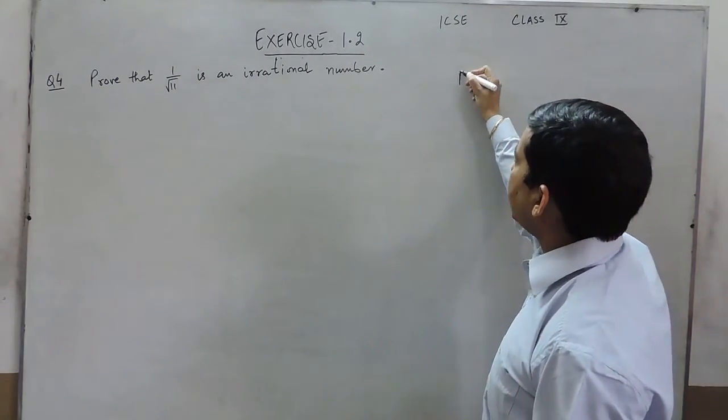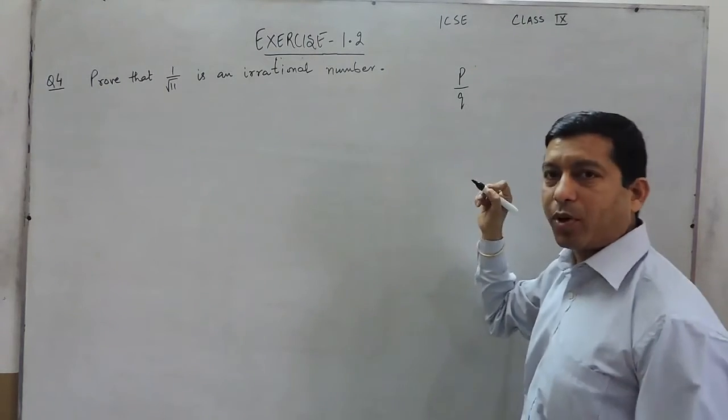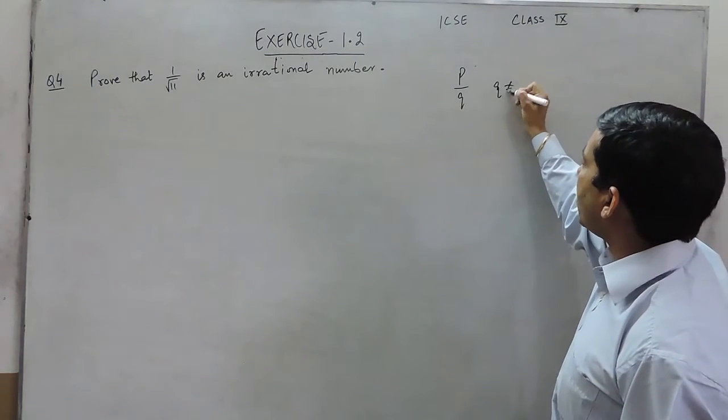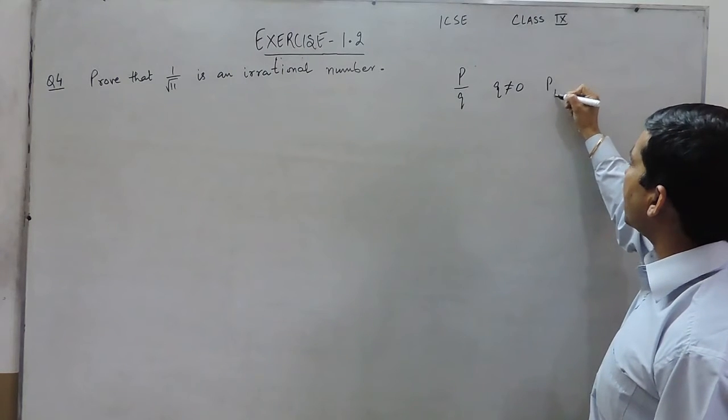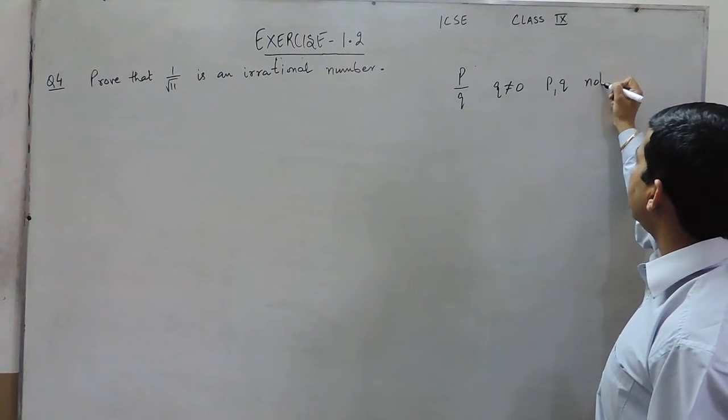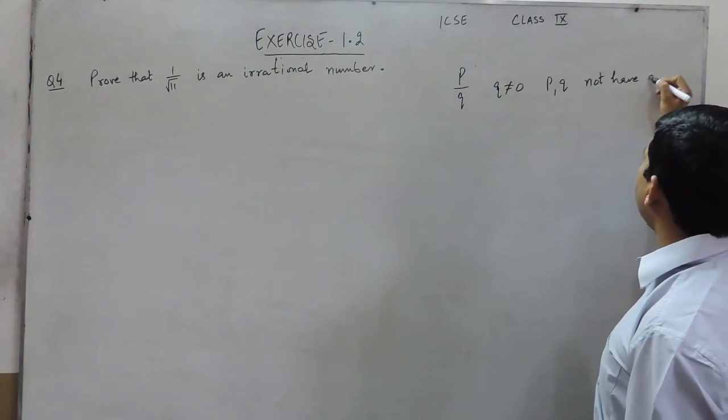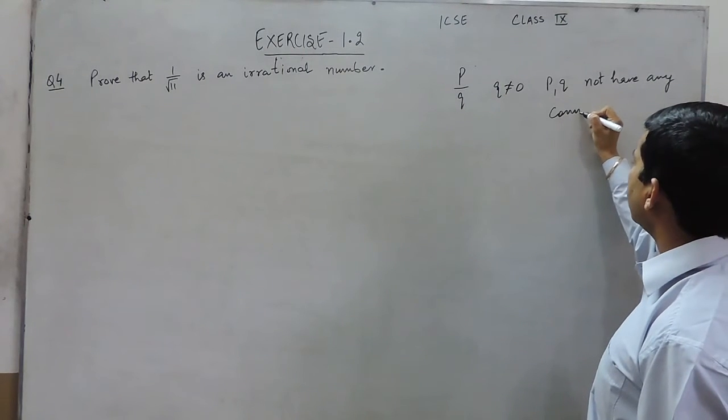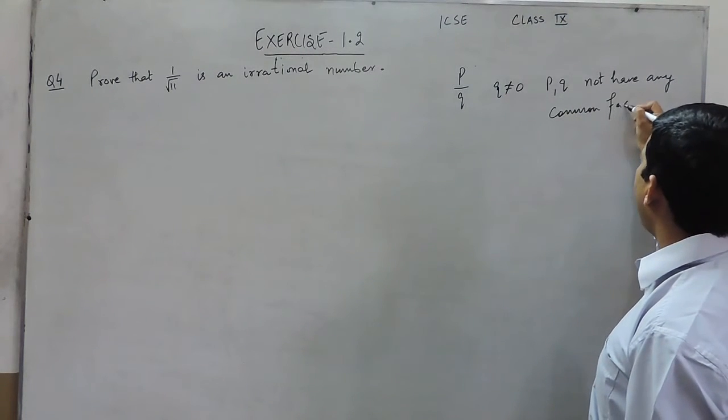Again we understand that a rational number can be put in the form of P upon Q, where Q is not equal to 0. P and Q do not have any common factor except 1.